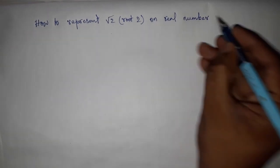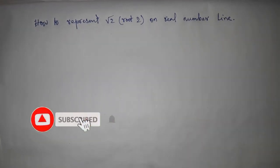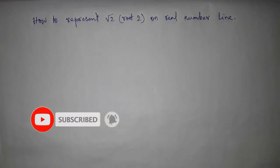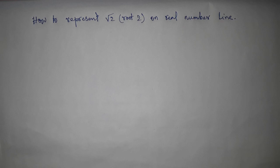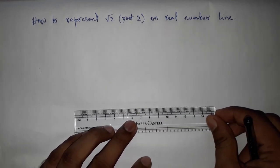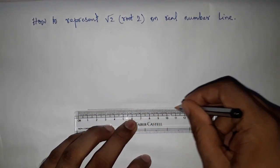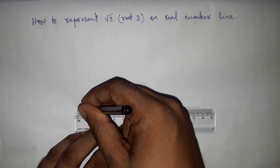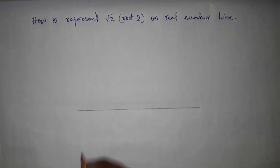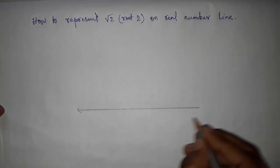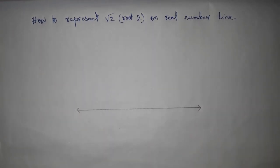I want to say please subscribe, like my channel, and press the bell icon for future video notifications. So first of all, drawing a line and mark the end by arrow. This represents a real number line.